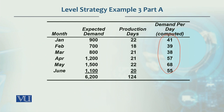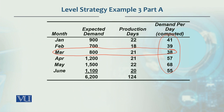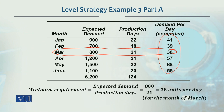The workforce requirement is based on the month of March, which has the lowest demand per day at 38 units per day. The calculation is: March expected demand of 800 divided by 21 production days available in March, which gives us 38 units per day. The workforce is sized accordingly for this minimum demand month.